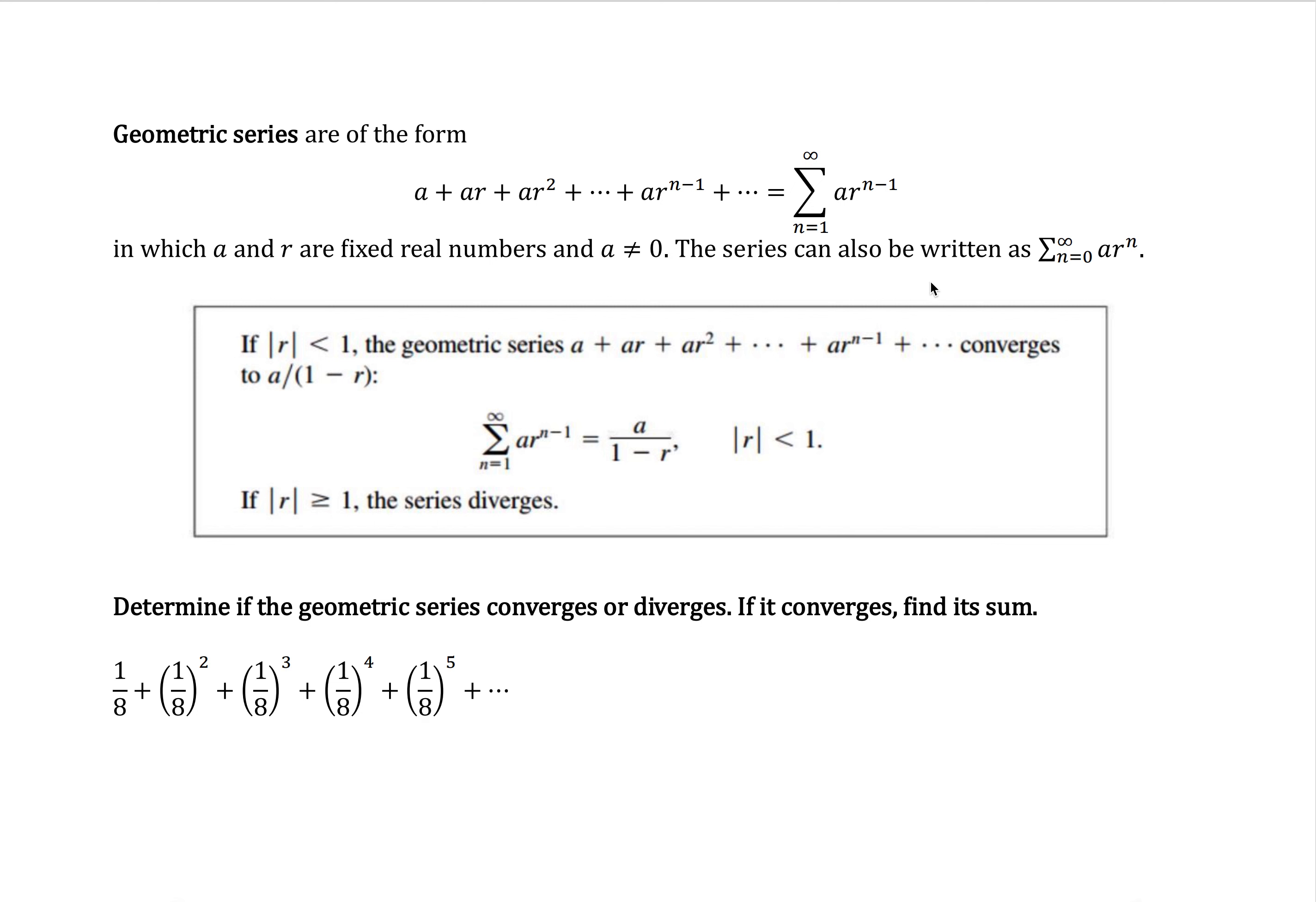If you have a geometric series and the absolute value of r is less than 1, then the geometric series converges, and it converges to a over 1 minus r. We will use this quite often.